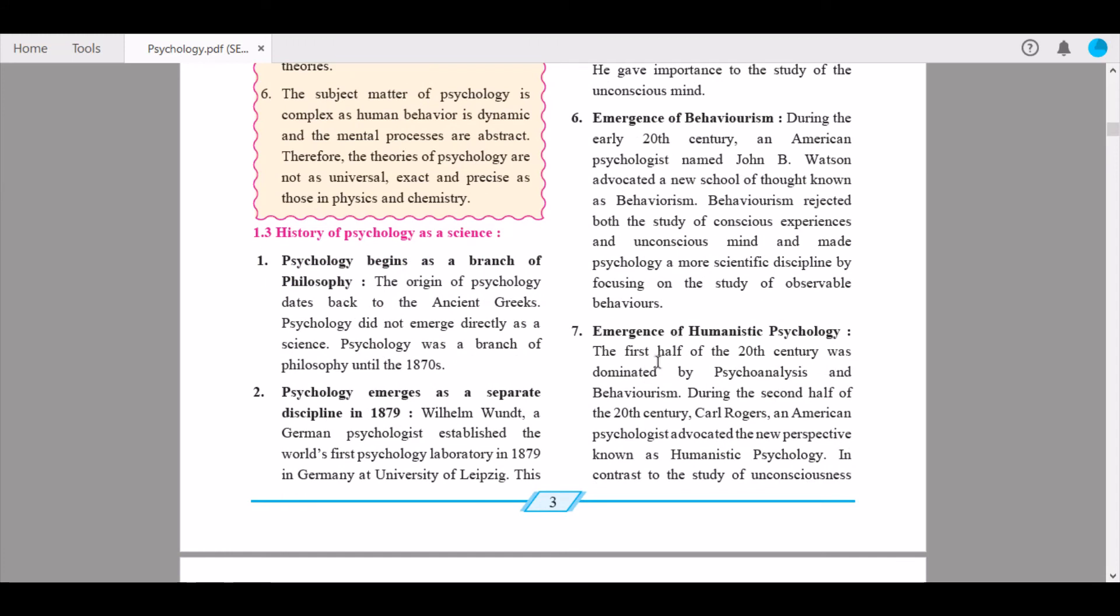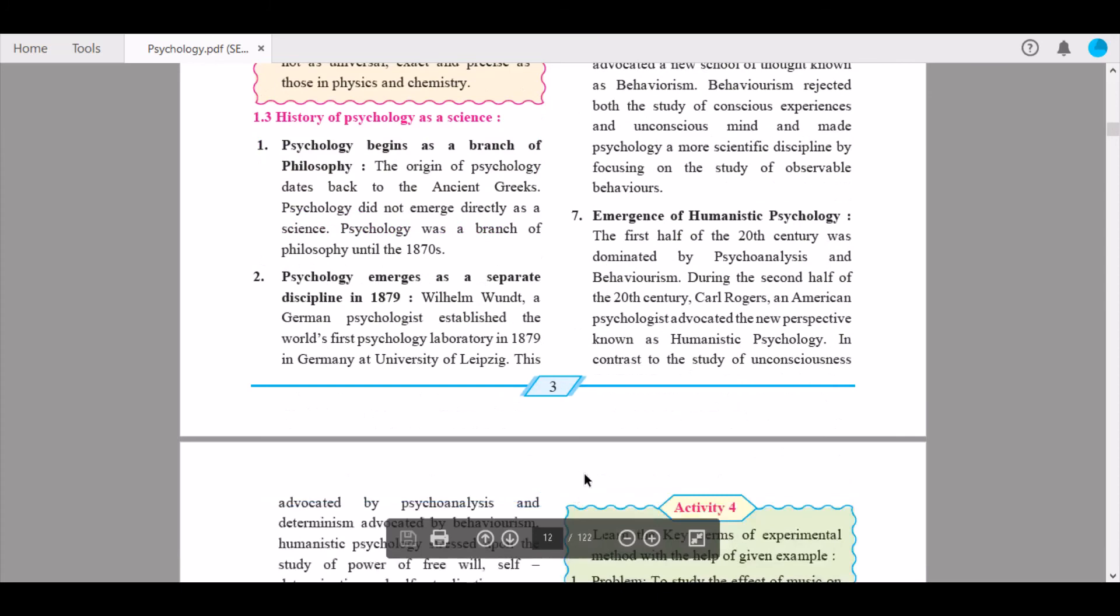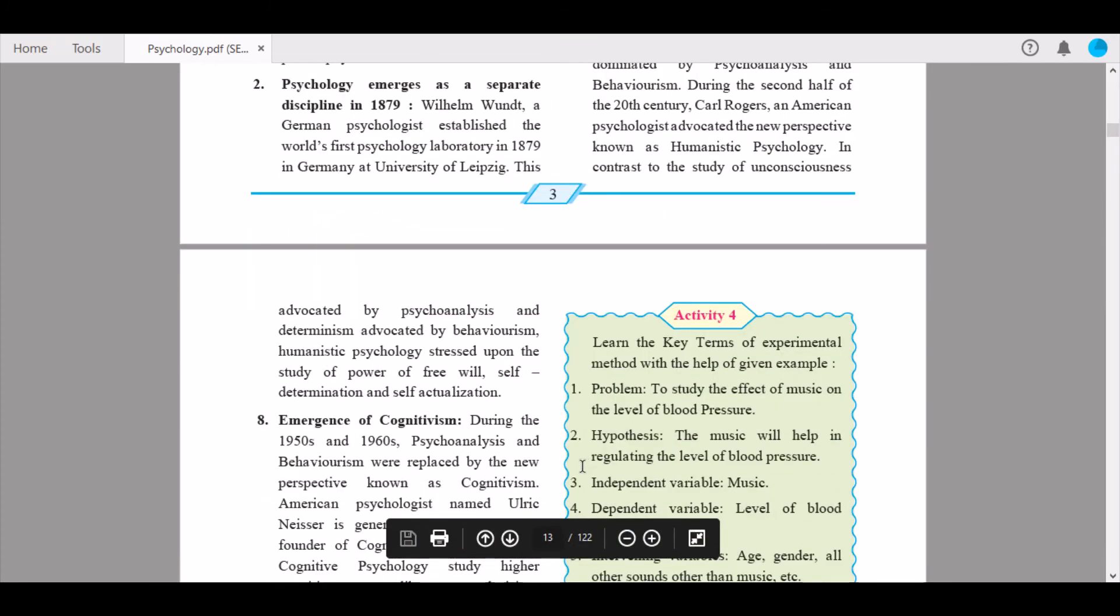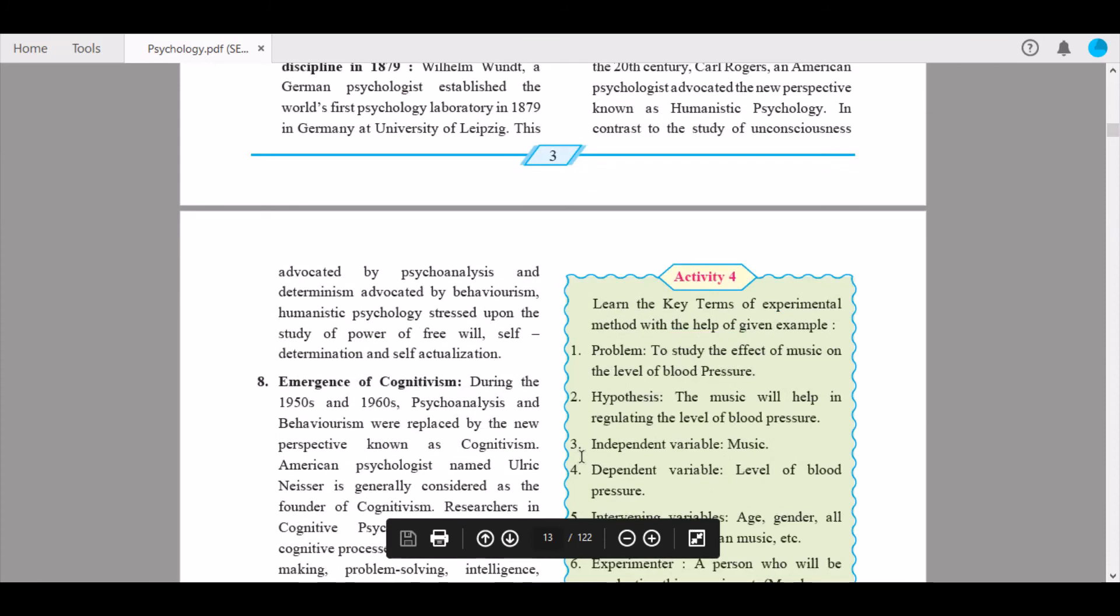Seventh is emergence of humanistic psychology. The first half of the 20th century was dominated by psychoanalysis and behaviorism. During the second half of the 20th century, Carl Rogers, an American psychologist, advocated the new perspective known as humanistic psychology. In contrast to the study of unconsciousness and determinism, humanistic psychology stressed upon the study of free will, self-determination, and self-actualization.